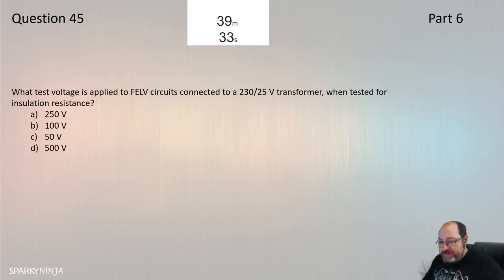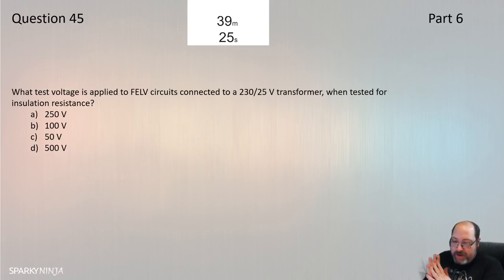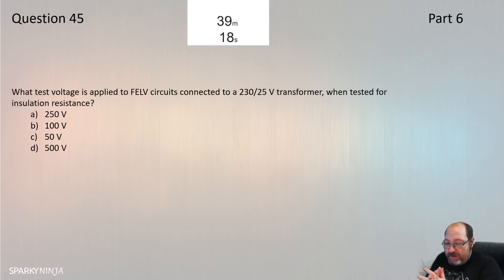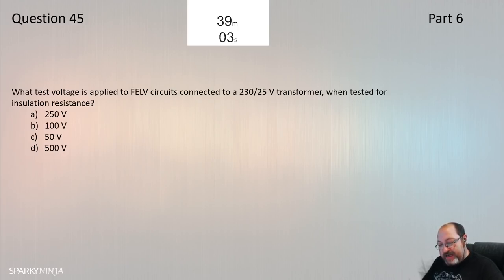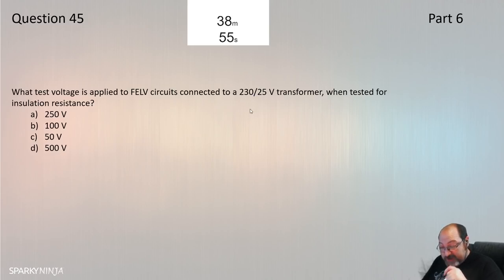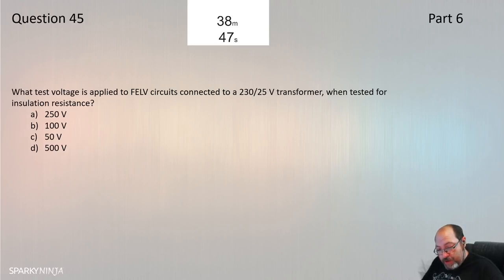Question 45 catches people out. They go to the insulation resistance table at 643.3.2, Table 64, see SELV and PELV listed, and assume 250V. However, the question is for FELV. Two paragraphs below the table it states: FELV circuits shall be tested at the same test voltage as that applied to the primary side of the source. The primary side is 230V, so the test voltage is 500V. Question 45 is D — 500V.